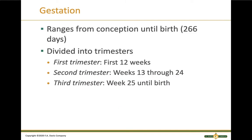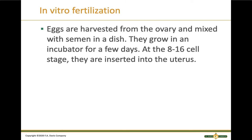We need to know how long pregnancy or gestation lasts. The average is 266 days, and that's divided into three trimesters, each three months long.